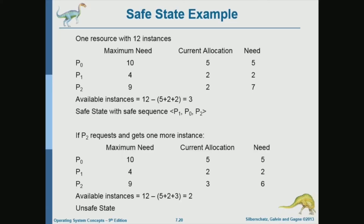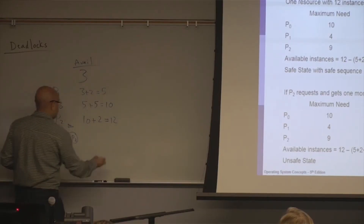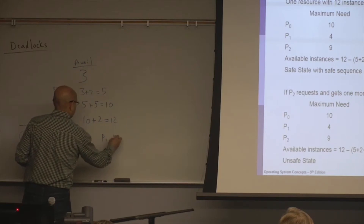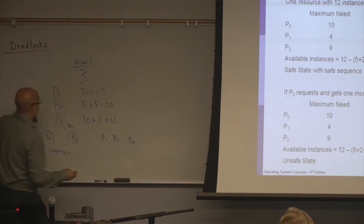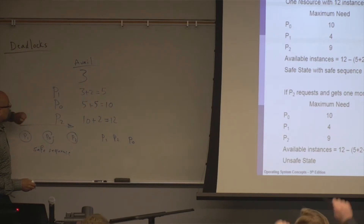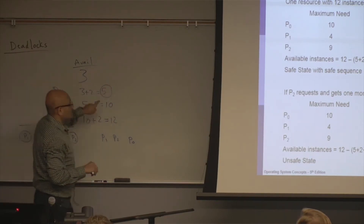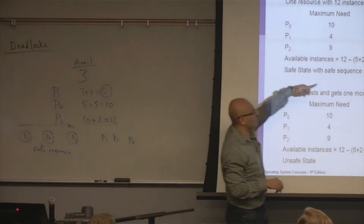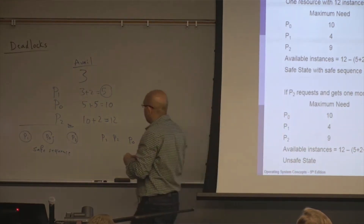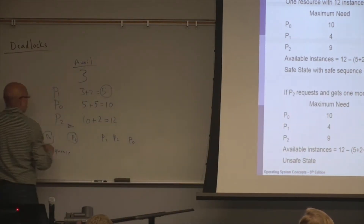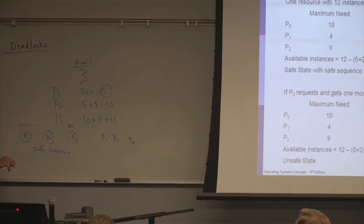A student asks: if it were ordered P1, P2, P0, would that still be a safe sequence? No. After P1 is done we'd have 5 instances available, but P2 needs 7 and we only have 5, so we cannot proceed with P2. The safe sequence is unique in this case, though generally there can be multiple safe sequences.